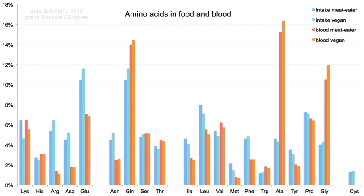In the form of proteins, amino acid residues form the second largest component of human muscles and other tissues. Beyond their role as residues in proteins, amino acids participate in a number of processes such as neurotransmitter transport and biosynthesis.